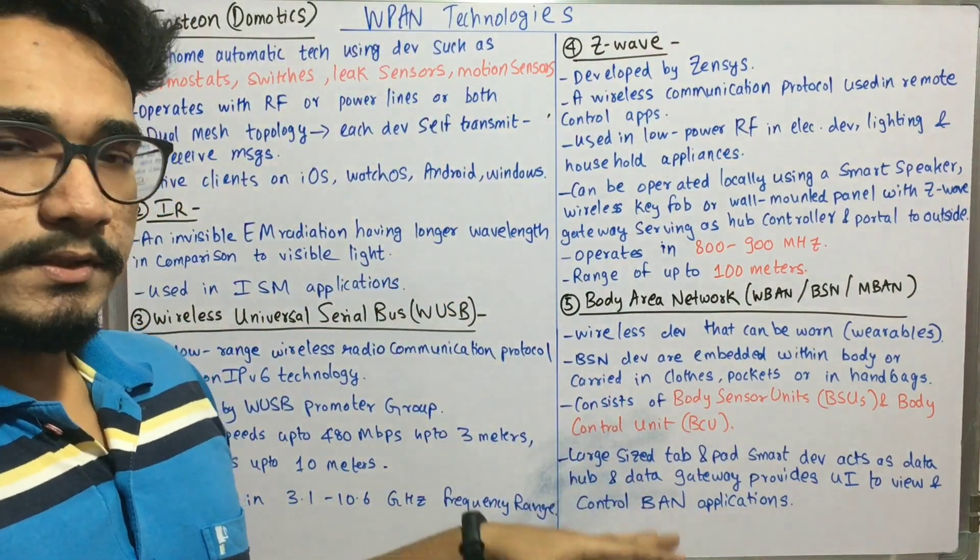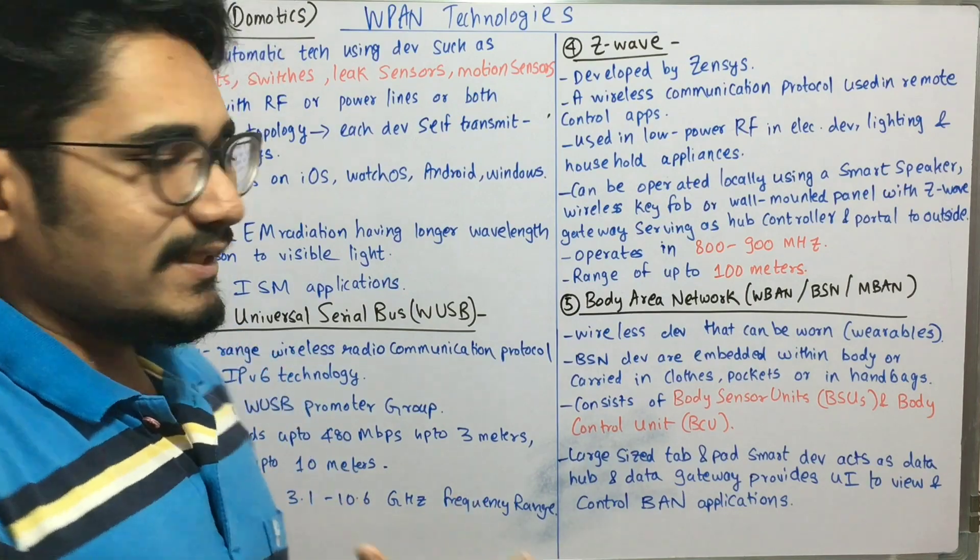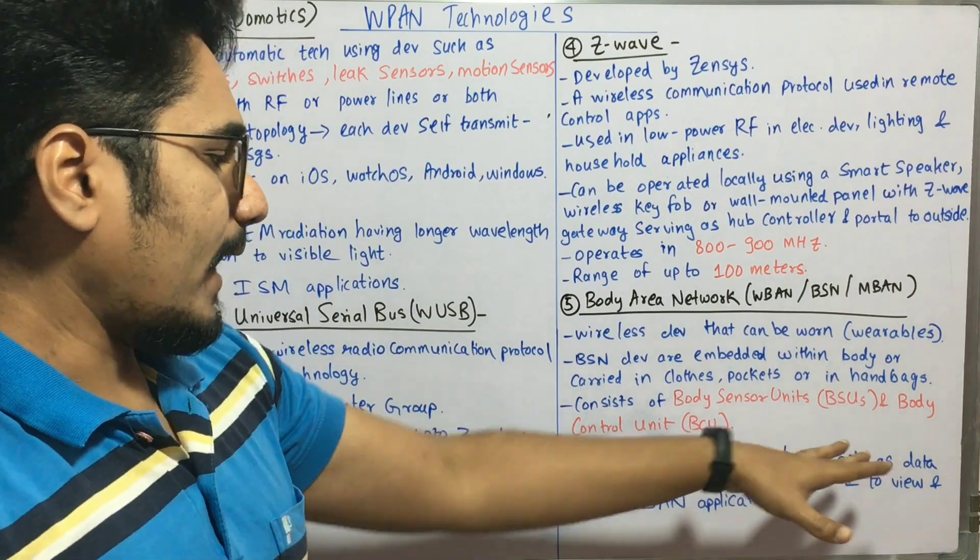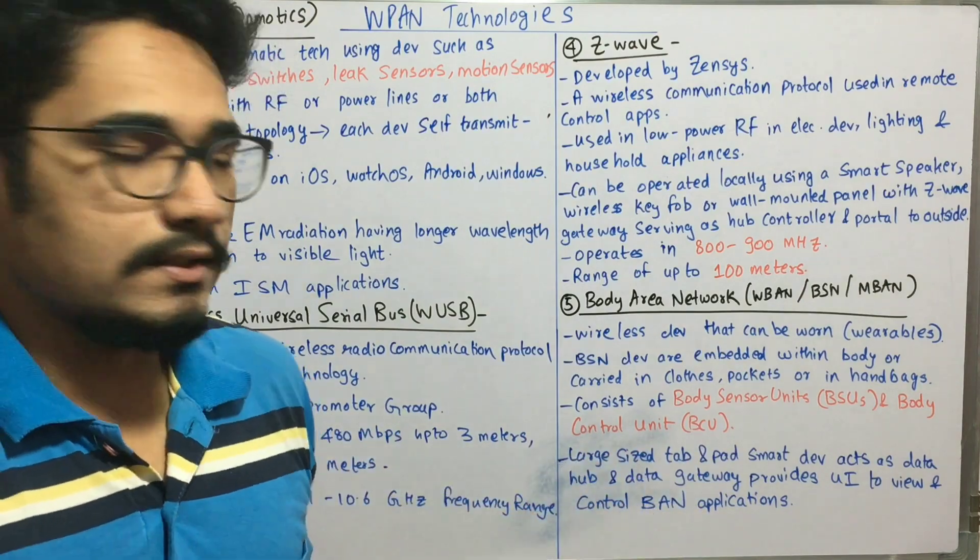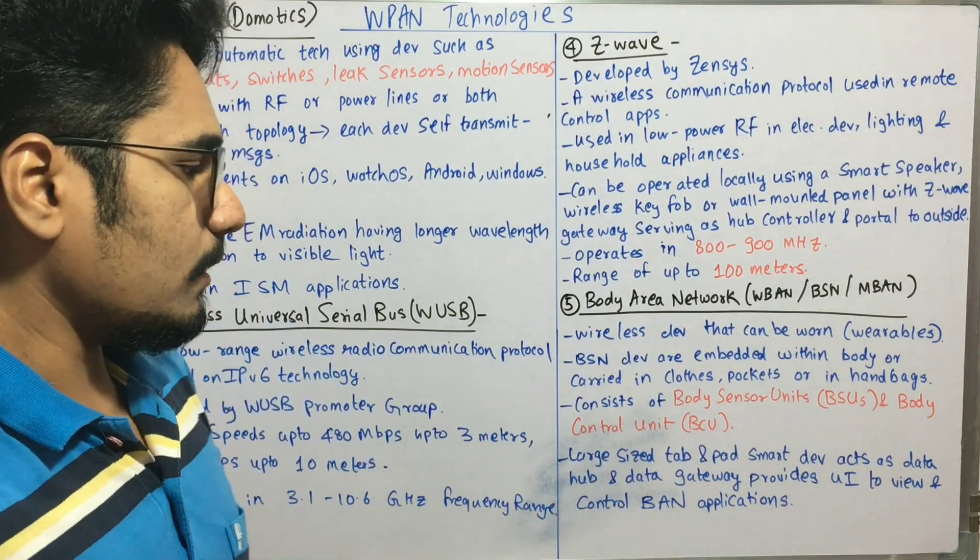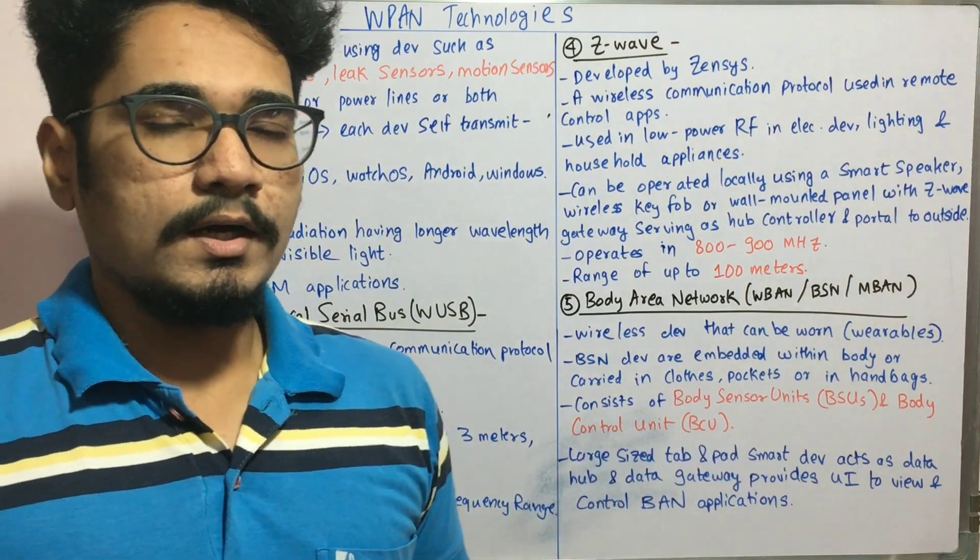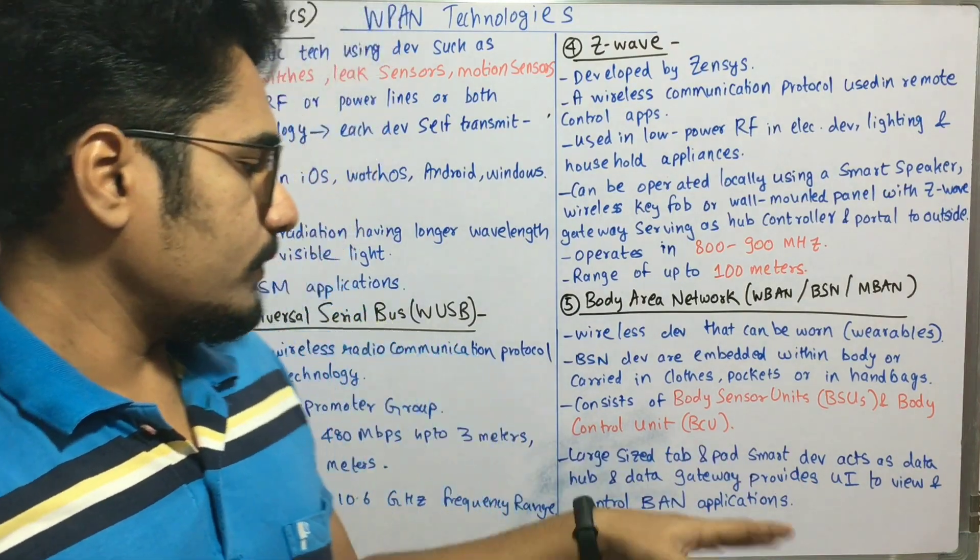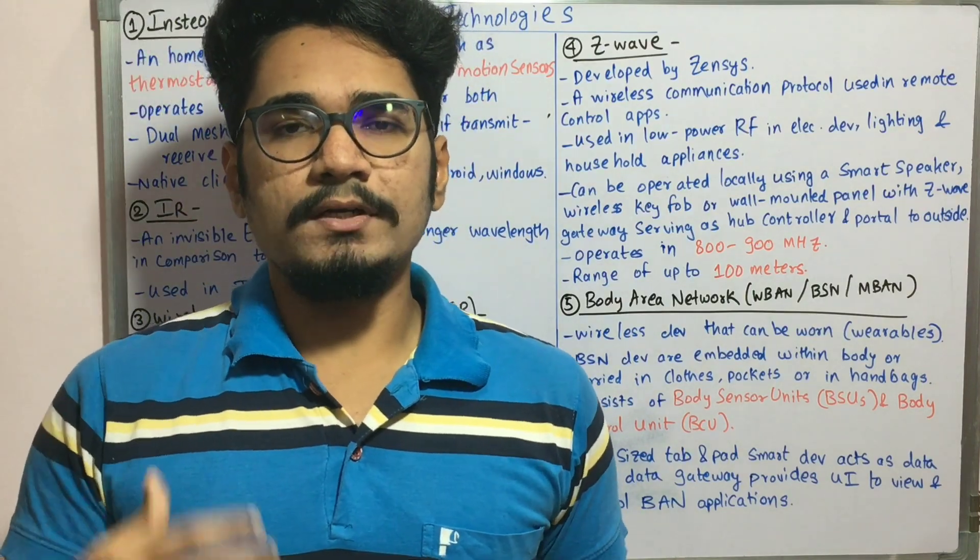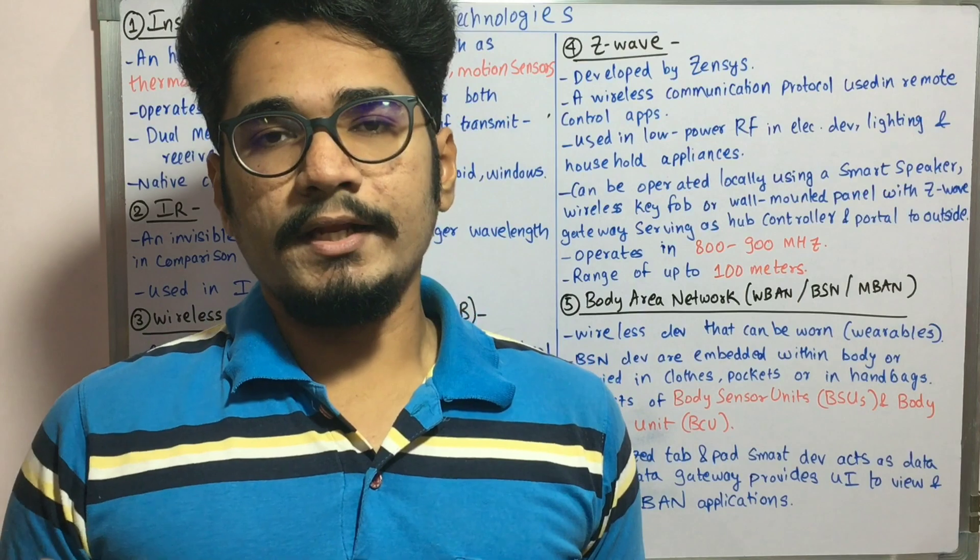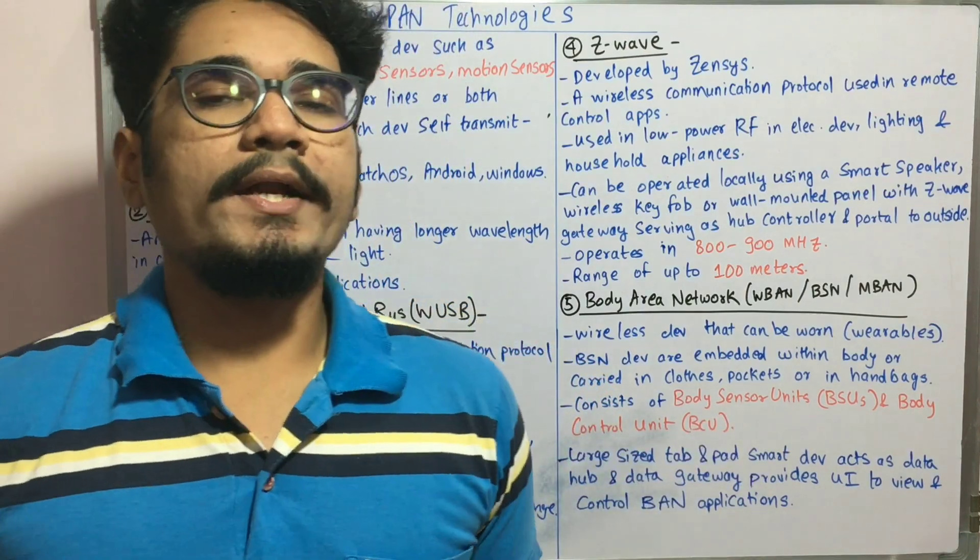To enable this, data hubbing is mainly done by large-sized tablet or pad-sized smart devices, which act as a data hub as well as a gateway. These devices provide the user interface to view and control various BAN applications. In the medical field, various crucial activities can be easily done with the help of body area network.